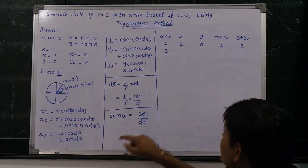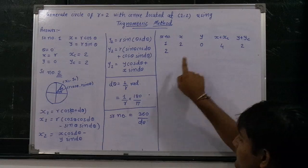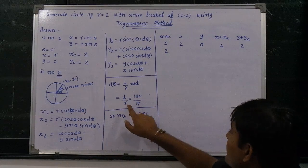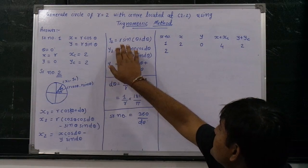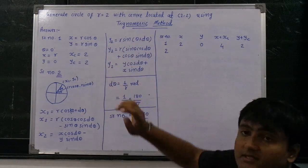x value and y values are now 2 and 0. d theta value is 1 upon r into 180 divided by pi.